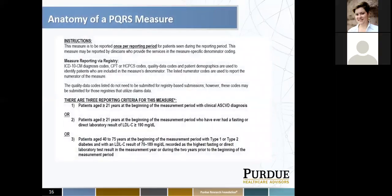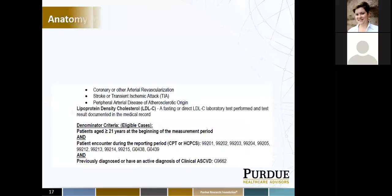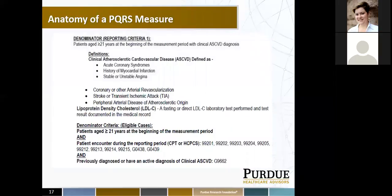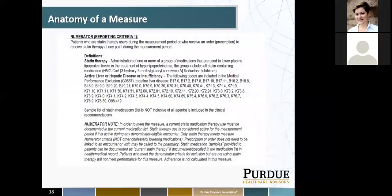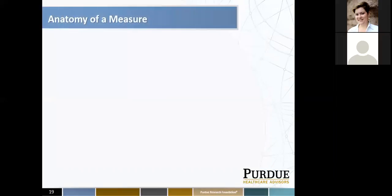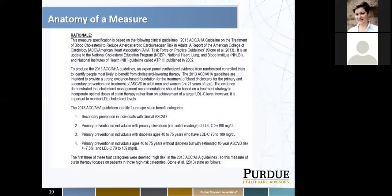There is more on the anatomy of a measure — an instruction area, measure reporting via registry, denominator and numerator information. Each individual specification sheet will list what it's looking at in your EHR. For this measure, the denominator is patients 21 years at the beginning of the measurement period with a clinical arteriosclerotic cardiovascular disease diagnosis. These specification sheets are also valuable for quality improvement, as the rationale section provides evidence-based criteria that may be helpful within your organization as well.